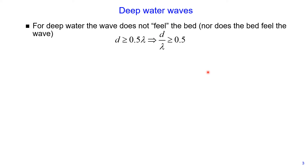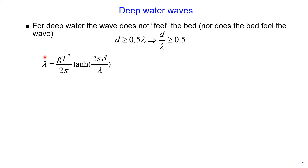Looking at the full equation for how to determine the wavelength, we can see that the wavelength depends on both wave period and water depth. In this equation, wavelength appears on both sides, so to solve this equation we need to use an iteration method.